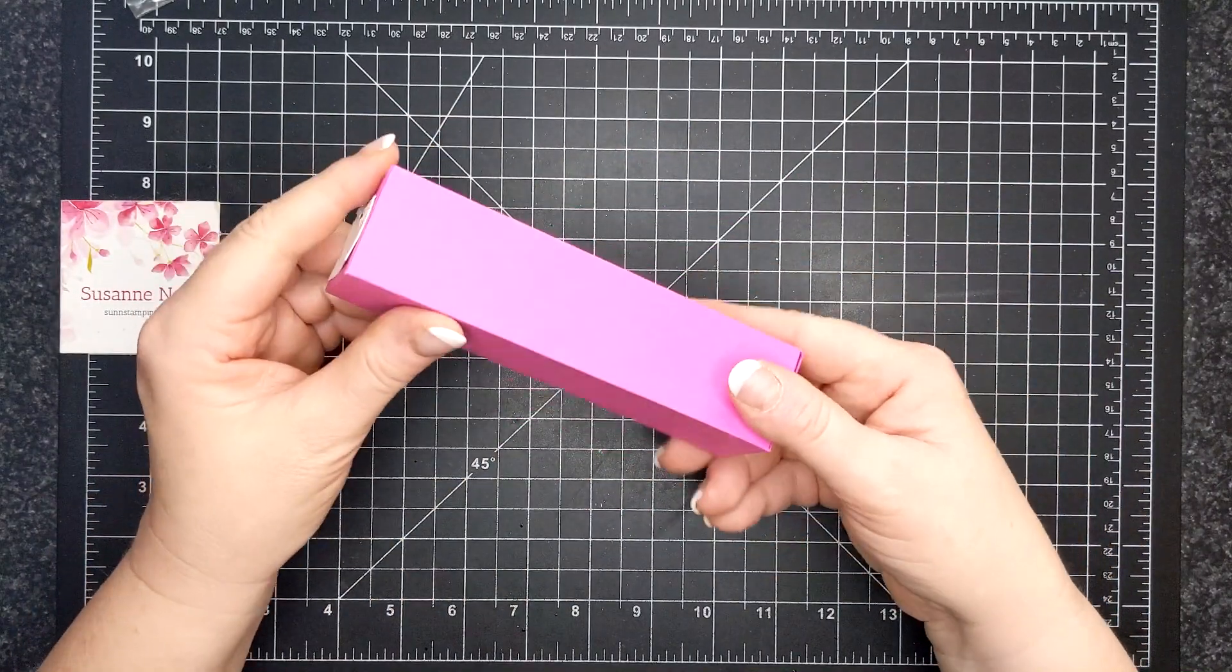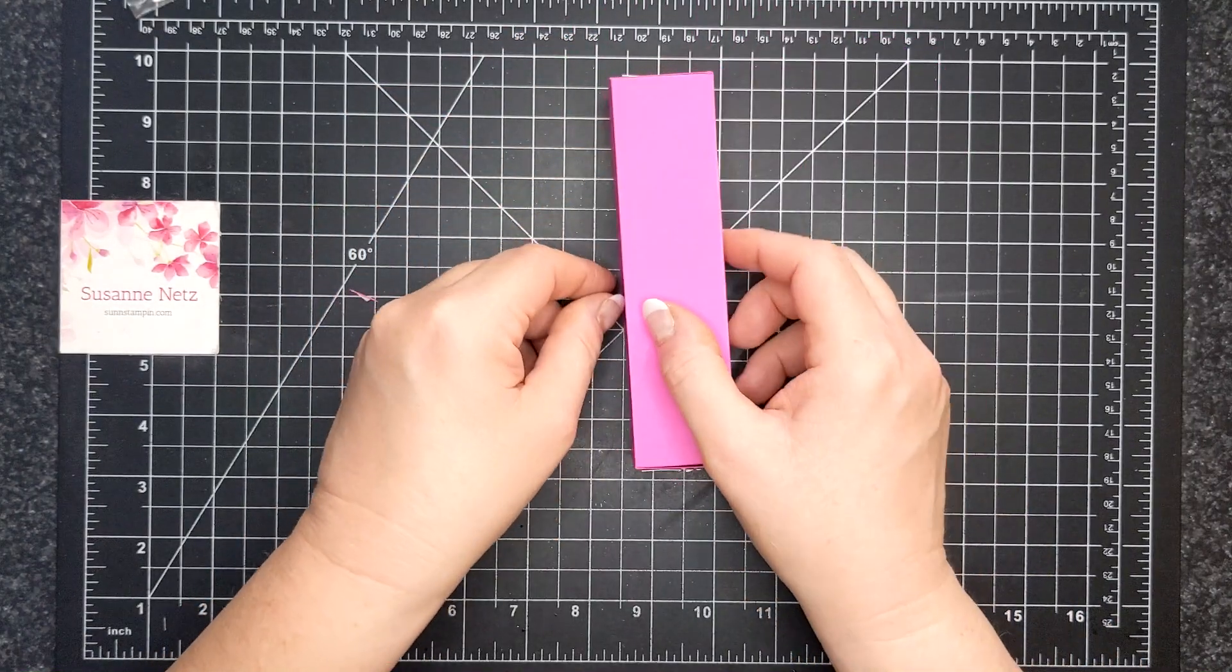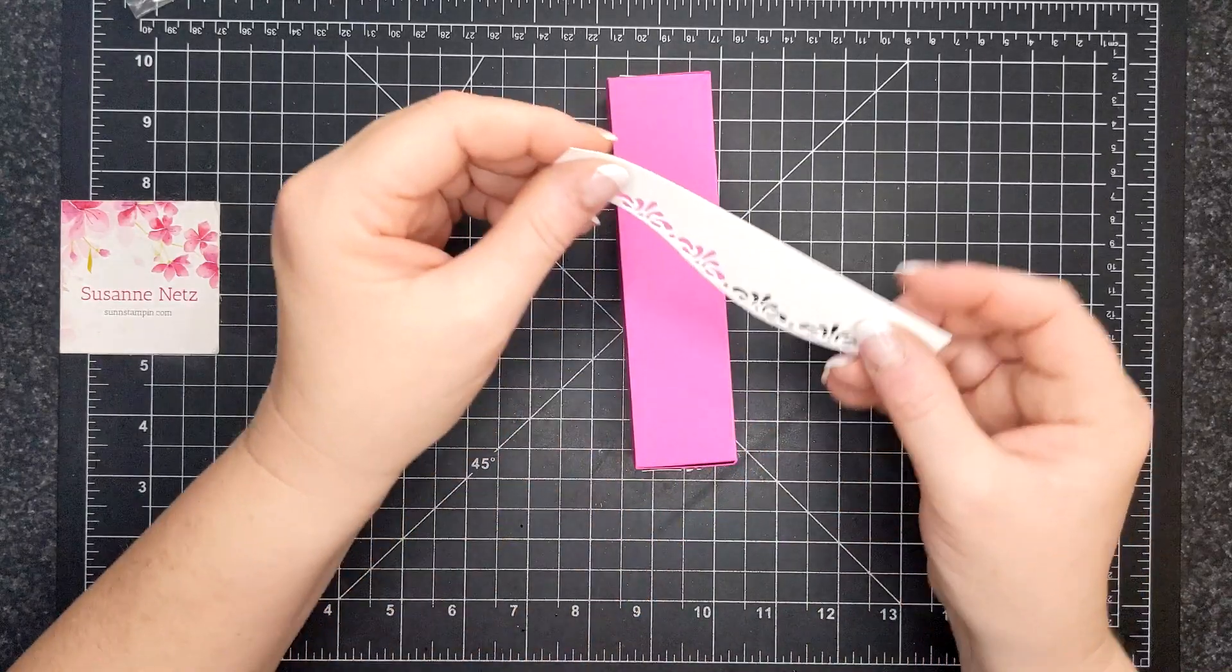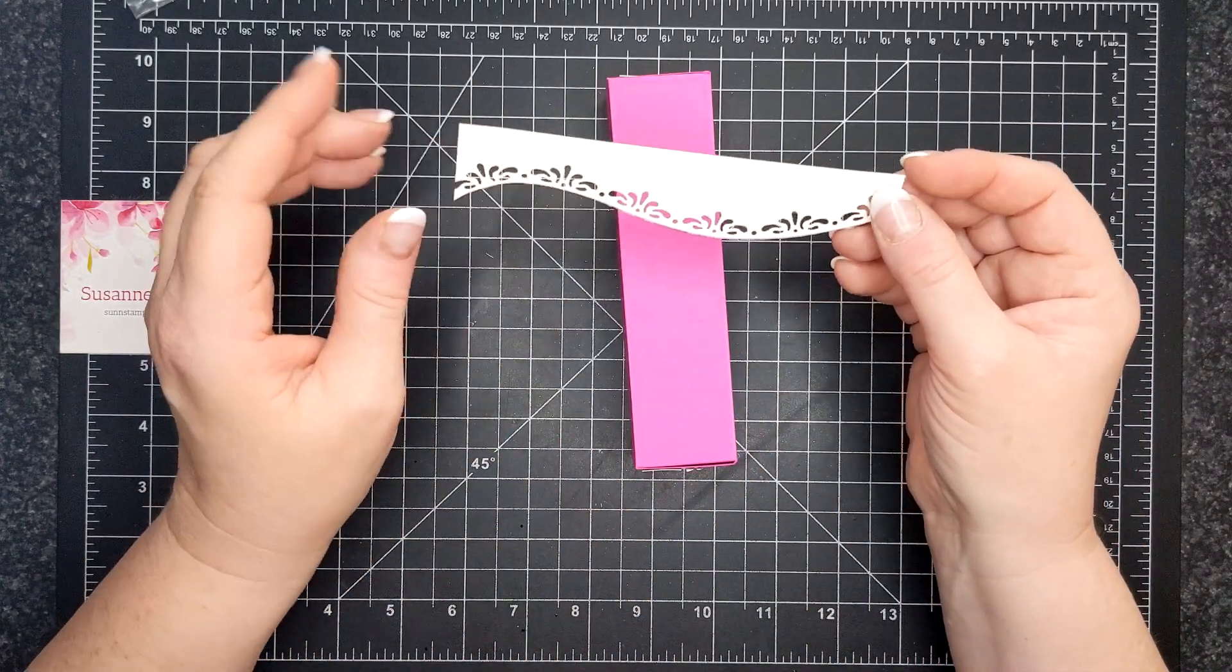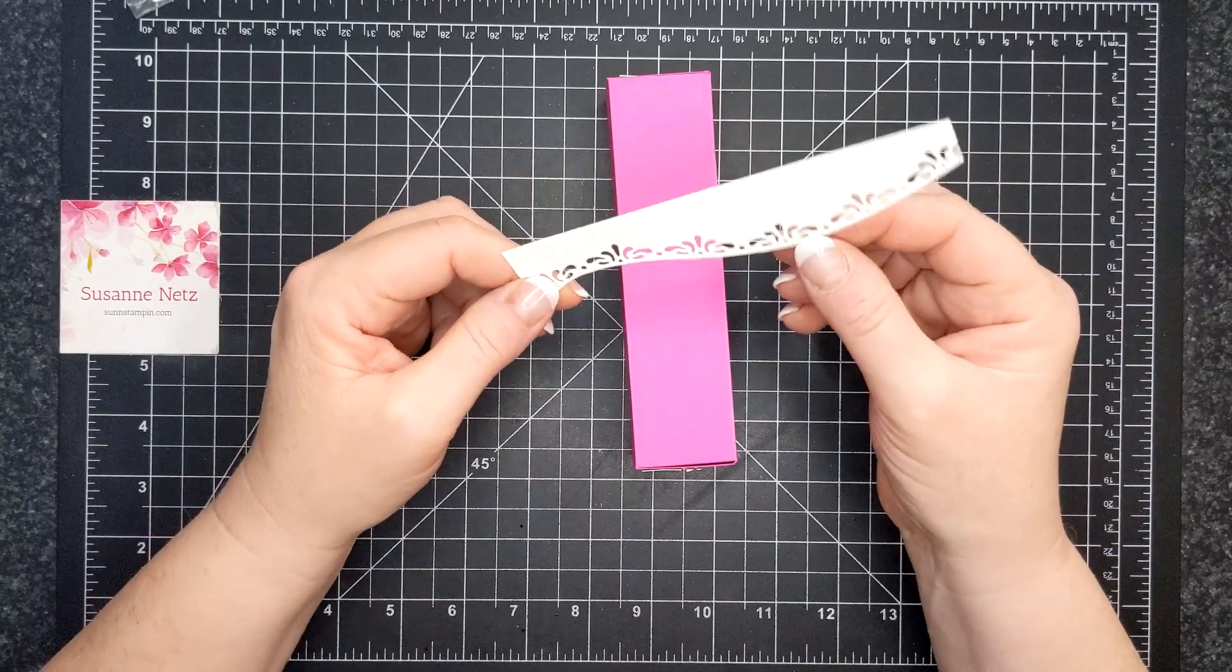And then let's see here. That's the back. So I also have these pieces. I have four of them and they're 5.75 by 1.25.